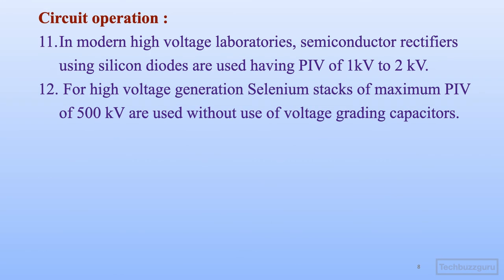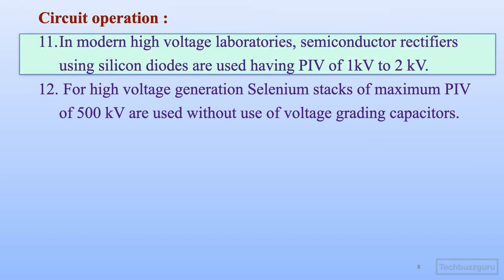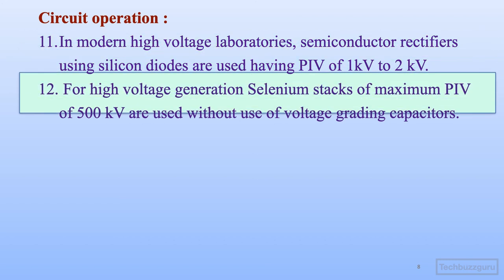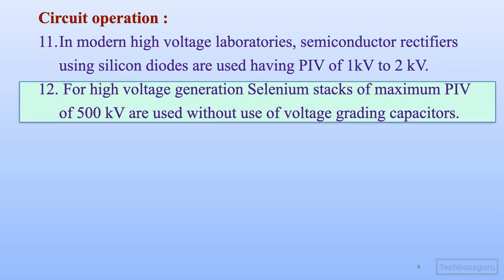In modern high voltage laboratories, semiconductor rectifiers using silicon diodes are used, having a peak inverse voltage of 1 kV to 2 kV per diode. For higher voltages, several silicon diodes may be connected in series along with voltage grading circuits. For high voltage generation, selenium stacks with a maximum peak inverse voltage of 500 kV are useful and do not require voltage grading capacitors.